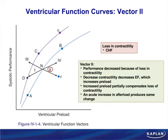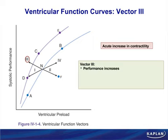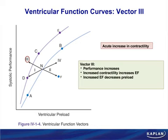Vector 3: going from N toward vector 3, preload went down but performance went up — they didn't go the same direction, so this is not Frank-Starling. This is an increase in contractility. Greater performance at a lower preload means increased contractility. When contractility increases, ejection fraction increases — more blood is pumped out — so preload goes down.